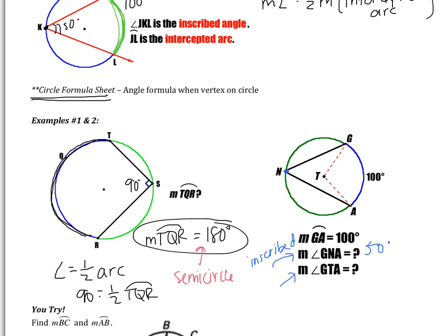Now angle GTA, the vertex is at the center. So this is called a central angle. If the vertex is at the center, then the angle will be equal to the arc. So GTA is going to be 100 degrees.